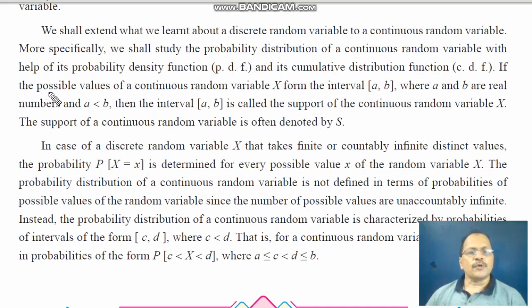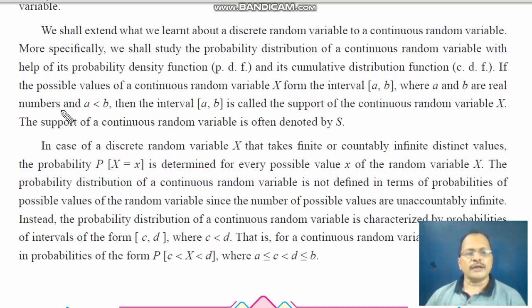For example, the time an athlete takes to complete a 1000m race is a continuous random variable. We shall extend what we learned about discrete random variables to continuous random variables — specifically, studying the probability distribution using the probability density function (PDF) and cumulative distribution function (CDF). The possible values of a continuous random variable X form the interval [A, B], where A and B are real numbers with A less than B.